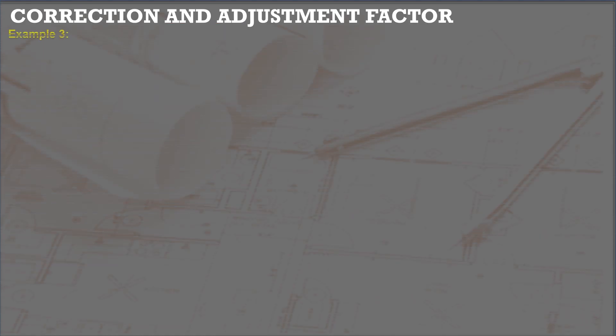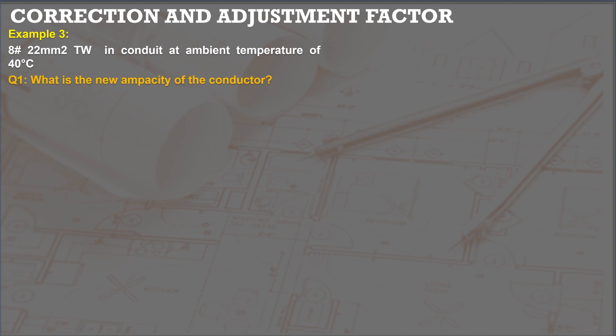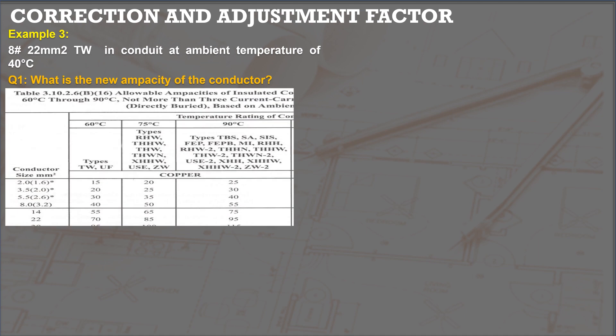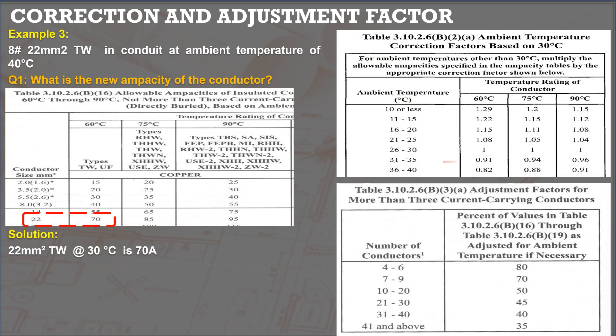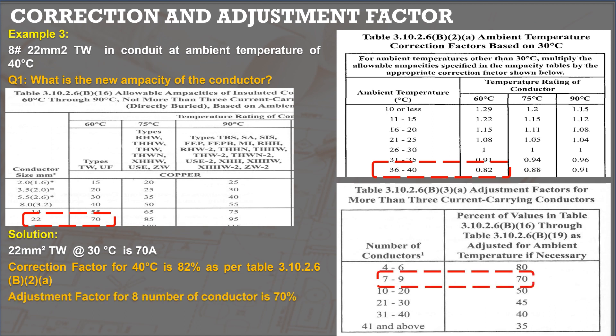Let's have another example. Eight 22 squared millimeters TW are installed in one conduit with an ambient temperature of 40 degrees Celsius. As per Table 3.10.2.6 B16, the ampacity of 22 squared millimeters TW is 70 amperes. The correction factor for 40 degrees Celsius is 82%, and the adjustment factor for seven to nine conductors is 70%. Therefore, the new ampacity of 22 squared millimeters shall be 70 × 82% × 70% = 40.18 amperes.